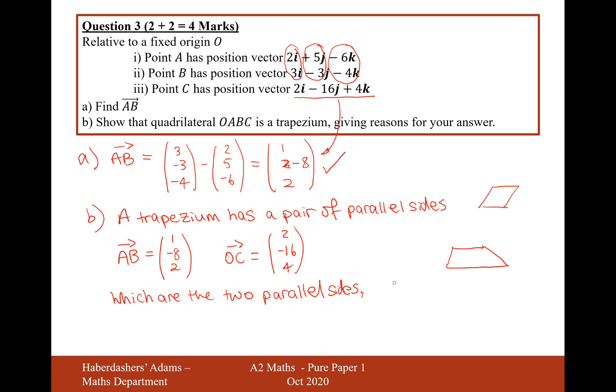So we also need to include a little sentence: but the lengths of AB and OC are different. And that's the property of a trapezium. They have a pair of parallel sides, but the length of those parallel sides are different. So there we are, that's the answer for question 3. That's worth four marks there. Let's now move on to question 4.